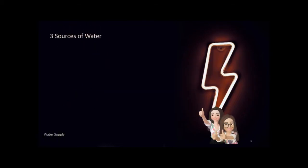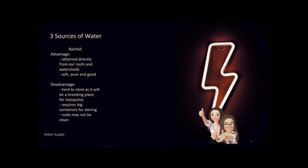Water has three sources: rainfall, natural surfaces, and underground water. First is rainfall. We can obtain water directly from our roofs and watersheds. It is soft, pure, and good in places where there is abundant rainfall. However, the disadvantages are that it is hard to store for a long time as it becomes a breeding place for mosquitoes, it is not treated so it may contain bacteria, it requires big containers for storing large quantities, and it is bad for places that receive little rainfall.